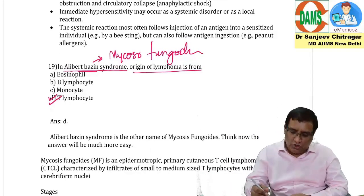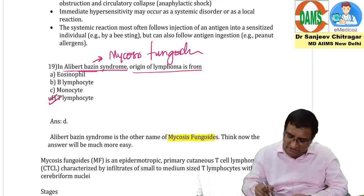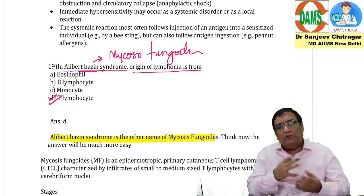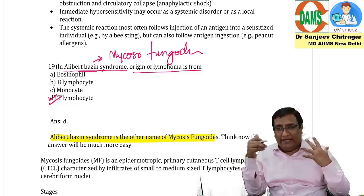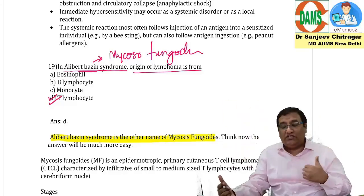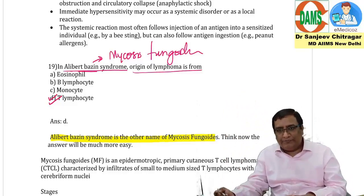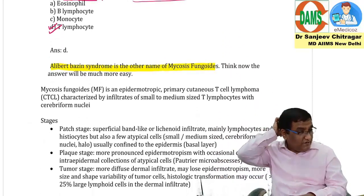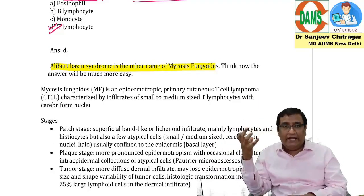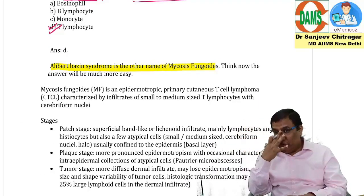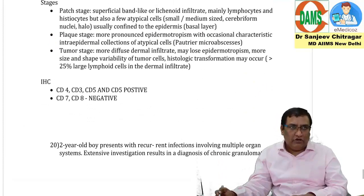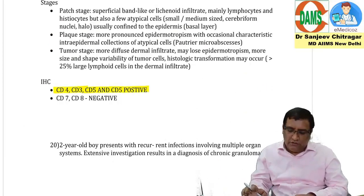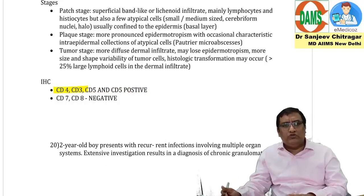Sézary syndrome is an extension of mycosis fungoides into the blood. In mycosis fungoides you will see cells with cerebriform nuclei. It is a T-cell lymphoma positive for CD3, CD4, CD5, and negative for CD7 markers.